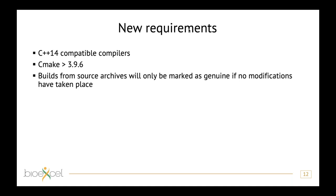Another change: GROMACS now checks if your downloaded source files match what we used to generate them. You will get a warning during compilation and the build will be marked as modified if any source files have been changed. This helps us ensure that issues are in our code and not modified code, and encourages people distributing modified versions — for example with PLUMED — to mark their version accordingly so you always know what you're actually using.